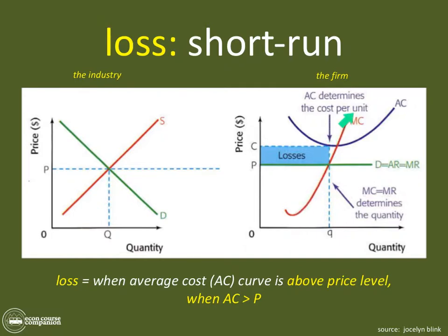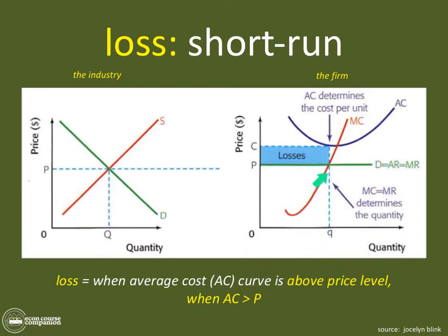Then we draw our marginal cost curve. Where our marginal cost curve intersects with our marginal revenue curve is where we find the perfect quantity for this firm to maximize its profits — the profit-maximizing level of output, which is Q. This process would be the same whether we're showing abnormal profit, loss, or normal profit.